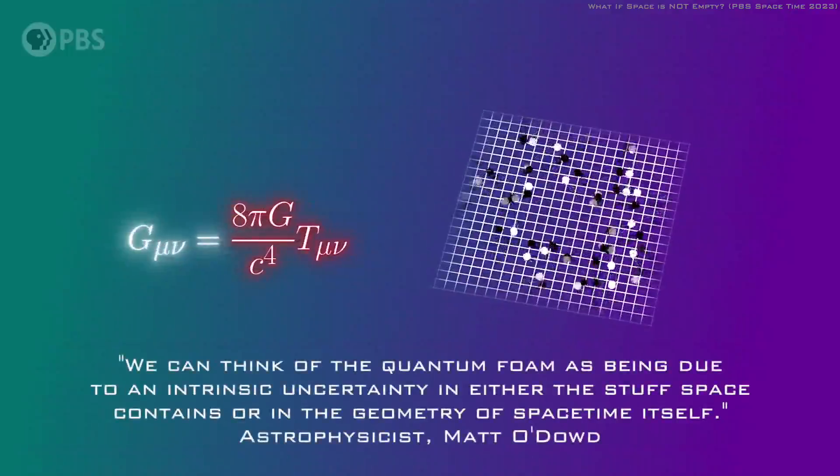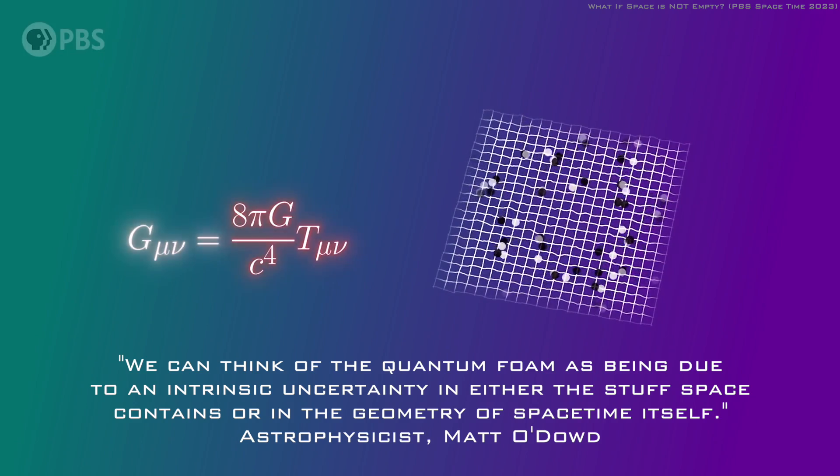Matt O'Dowd from PBS Space-Time summarizes it best. We can think of the quantum foam as being due to an intrinsic uncertainty in either the stuff space contains or in the geometry of space-time itself.